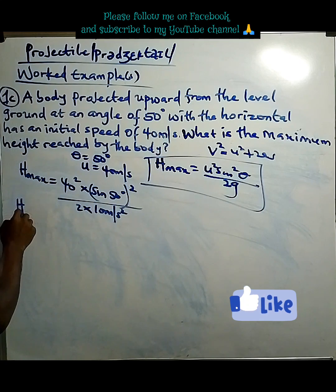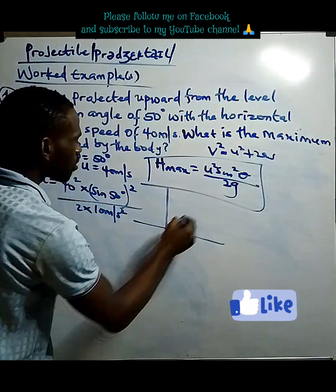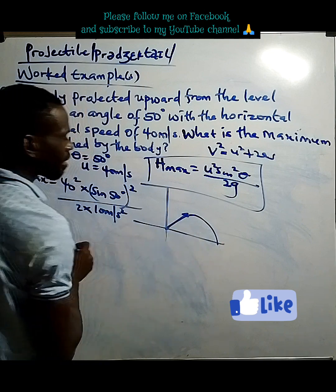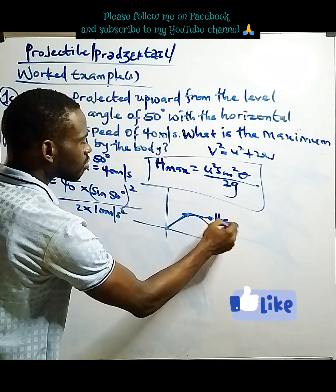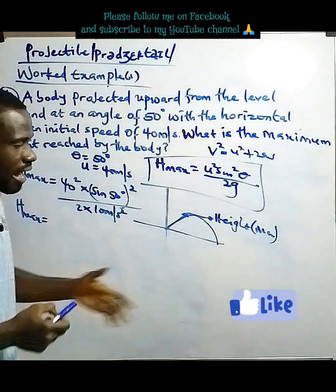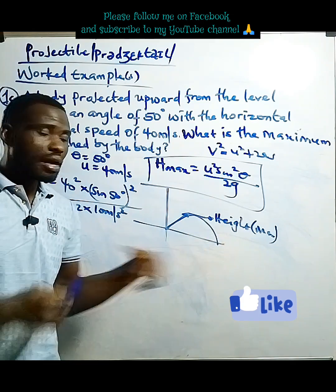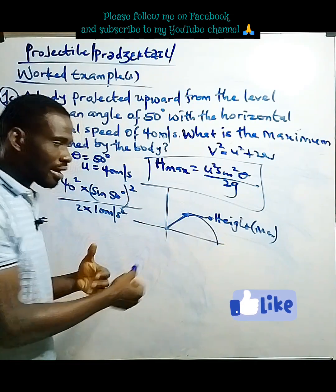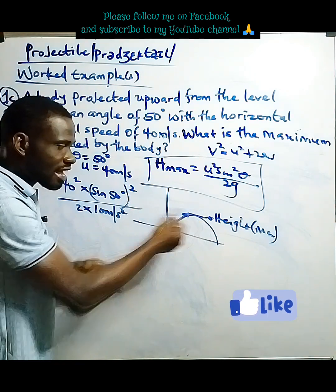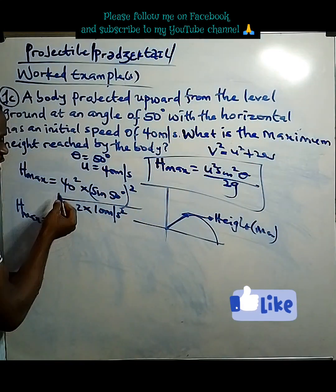The highest height attained by this body — the body is projected like this, it flies upward to maximum height before gravity sends it back. At maximum height, it is the first phase of the whole movement. The body disobeys gravity up to max height, then loses all its initial vertical speed and starts falling back.